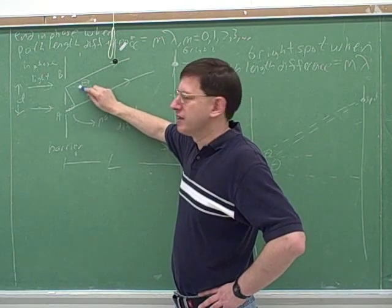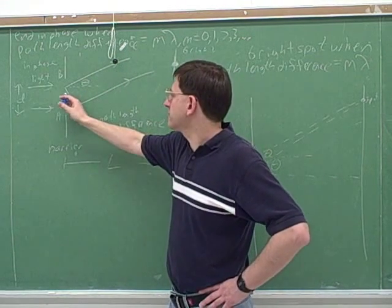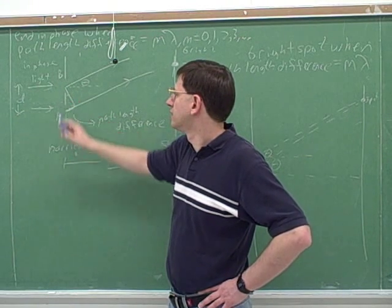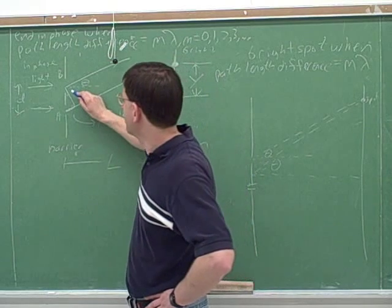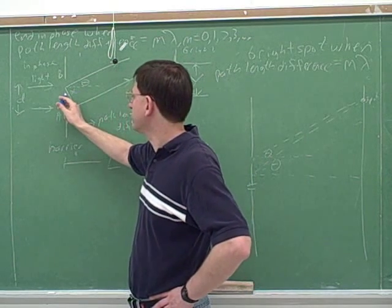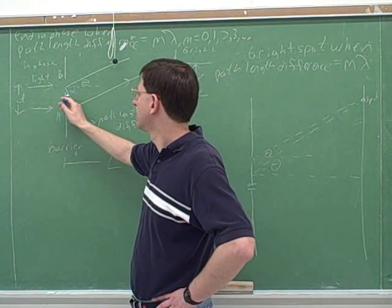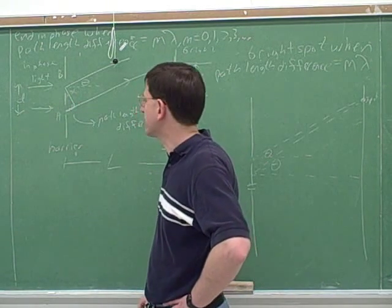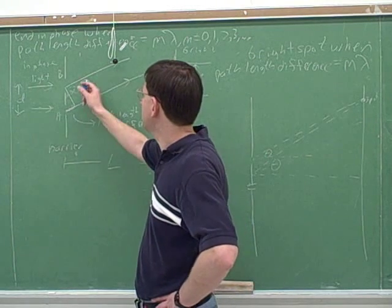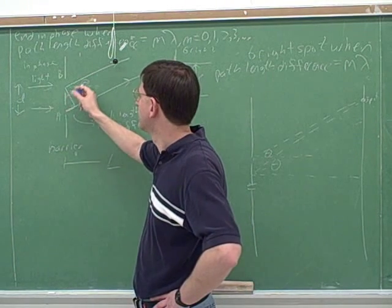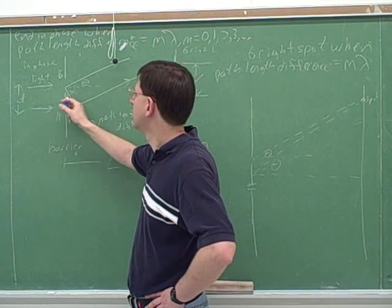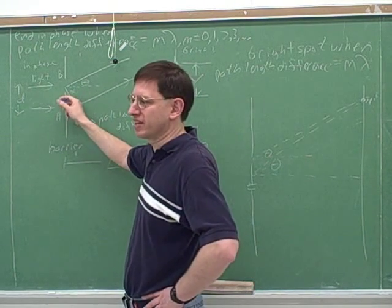It's 90 minus. Yeah, these are complementary. So how big is this angle? If we call this angle alpha, how big would this angle be? Inside the triangle. What's theta plus alpha? 90. Yeah. And what's alpha plus this angle? It's also 90. So it's theta also. So this must also be theta. That's right.